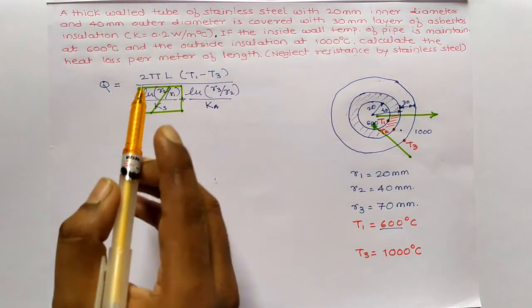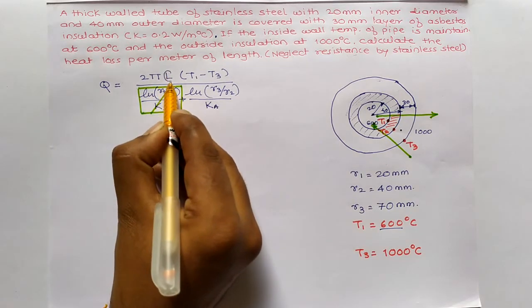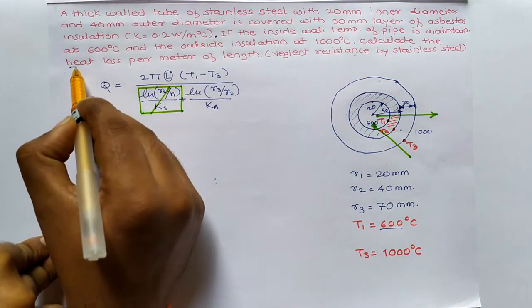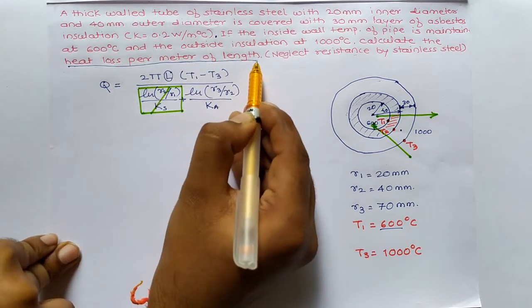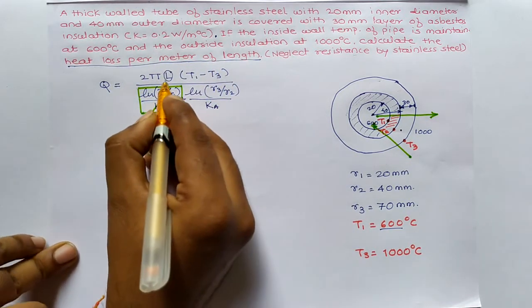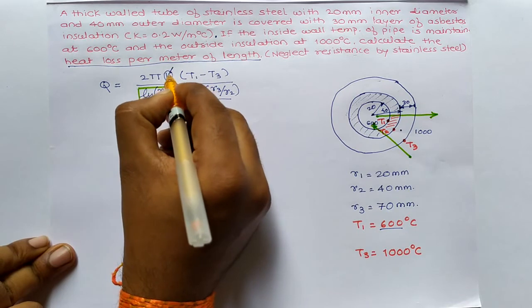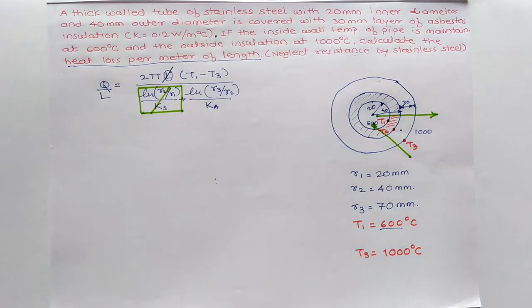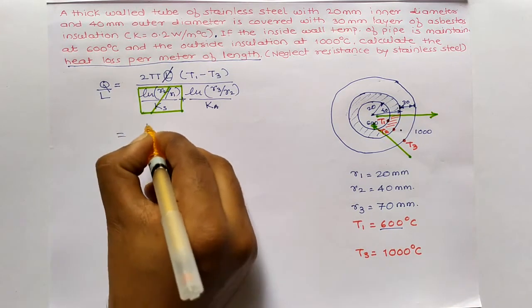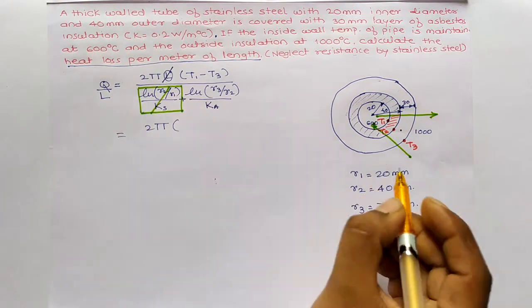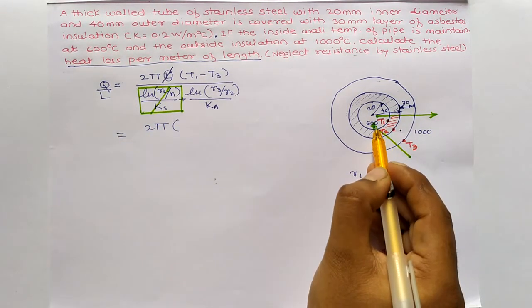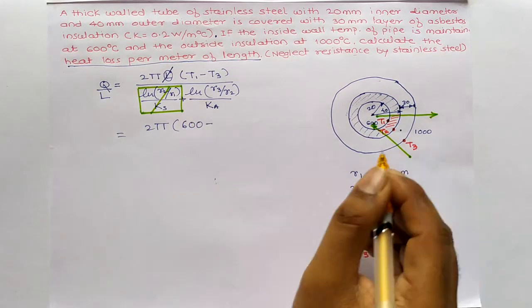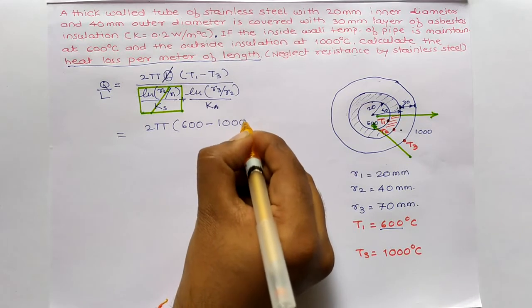And inside of this, they have not given the L. But they need heat loss per meter of length. So, we need to take L to the left hand side. This will be the formula. Now, put the values 2π(T1), T1 which is 600, minus T2, 1000,